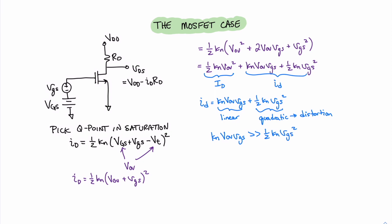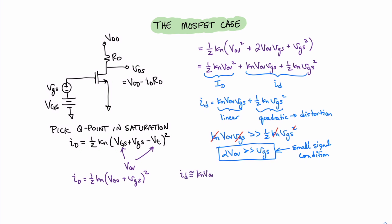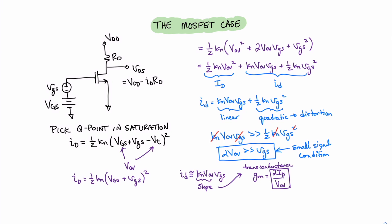In this inequality relationship, we can cancel the KNs and one of the VGSs on either side. Moving the one half over, we get that 2·VOV must be much, much greater than VGS. This is our small signal condition, which gives us hope that we will have a linear response in our amplifier. If that condition is met, ID will equal KN·VOV·little VGS. The KN·VOV is the slope of our linear response — the transconductance value G sub M, equal to 2·ID over VOV. This also means the voltage gain AVO equals minus GM times RD.